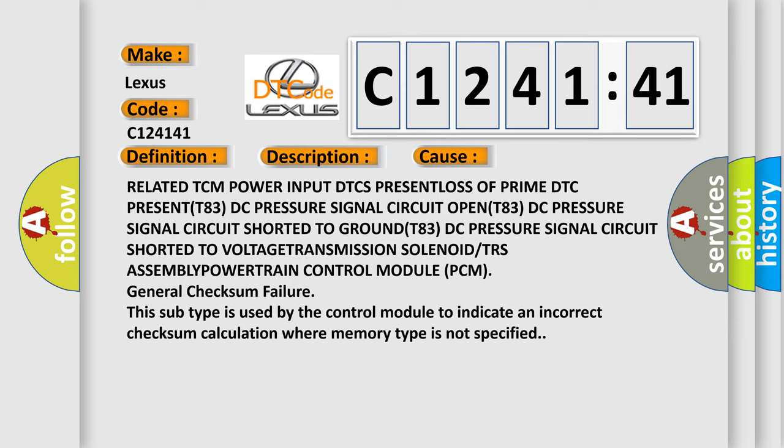Related TCM power input DTC present, loss of prime DTC present, T83 DC pressure signal circuit open, T83 DC pressure signal circuit shorted to ground, T83 DC pressure signal circuit shorted to voltage, transmission.